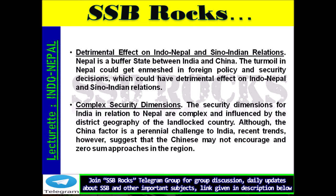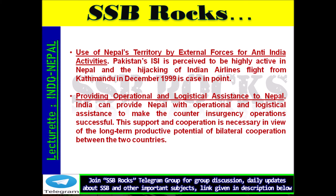Recent trends suggest that the Chinese may not encourage zero-sum approaches in the region. Pakistan's ISI is perceived to be highly active in Nepal, and the hijacking of Indian Airlines flight from Kathmandu in December 1999 is a case in point regarding the use of Nepal's territory by external forces for anti-India activities. India can provide Nepal with operational and logistical assistance to make counterinsurgency operations successful. This support and cooperation is necessary in view of the long-term productive potential of bilateral cooperation between the two countries.